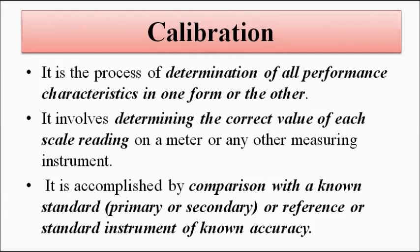Calibration is basically the process of determining all the performance characteristics of a measuring instrument or measurement system. The output — whether analog or digital — will have a certain fixed range with a minimum and maximum value, divided into units. Each unit on the scale will have a certain value.